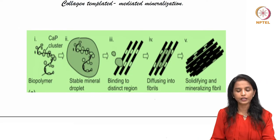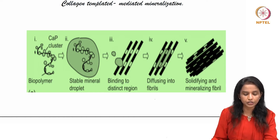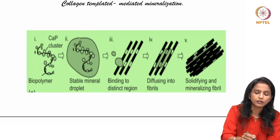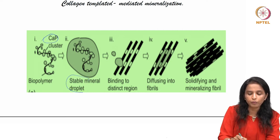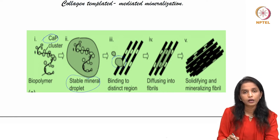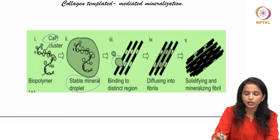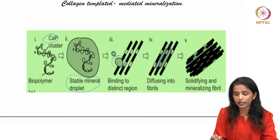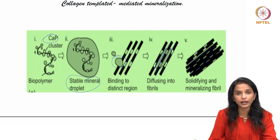A schematic diagram shows collagen template-mediated mineralization: calcium phosphate clusters form a stable mineral droplet, attach to the binding regions of collagen fibers, diffuse into the interfibrillar regions of the collagen template, merge, and solidify, mineralizing the entire fibril.